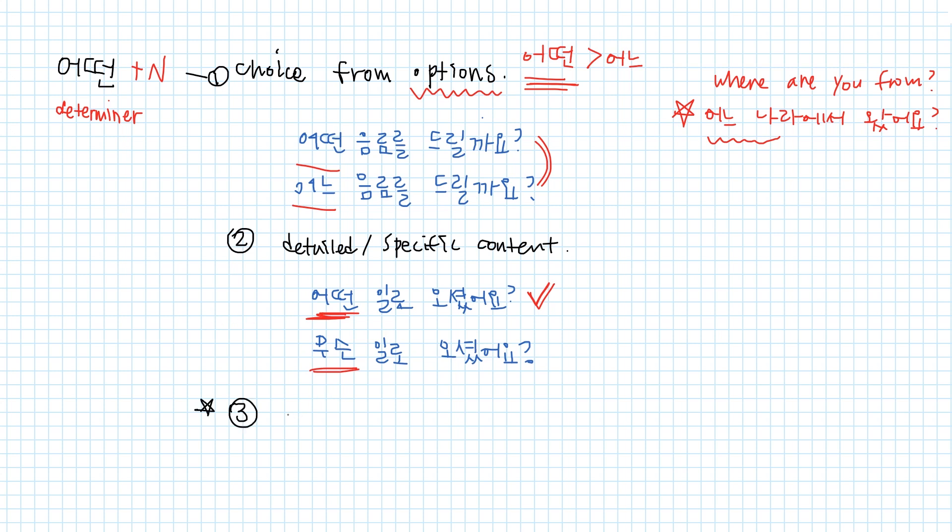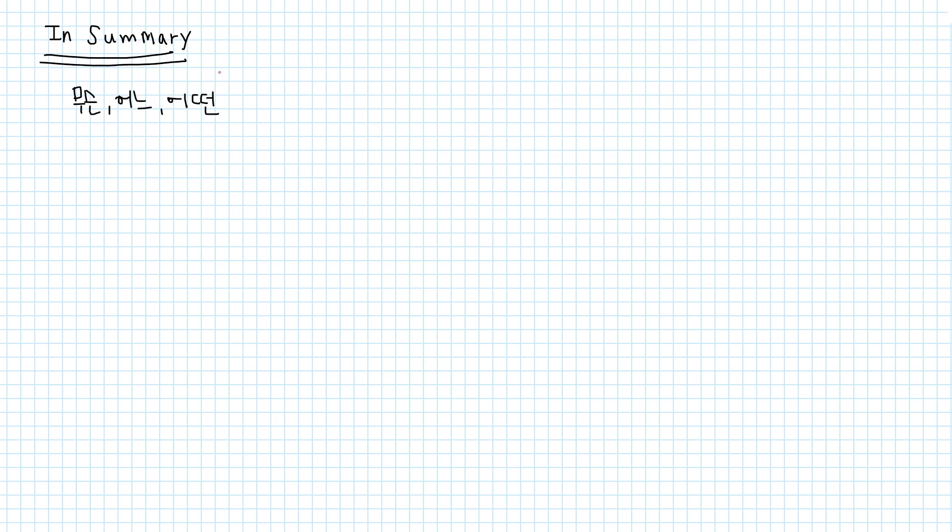Lastly, 어떤 is used to ask particular features or characteristics of a thing or a person. For example, 한국은 어떤 나라예요? What is Korea like? 그 남자는 어떤 사람이에요? What is he like? In summary, 무슨, 어느, 어떤 are determiners and they are question words. But they also have meaning like some or any, referring to someone or something that is unknown or unspecified. But in this video, we're going to just focus on question words.